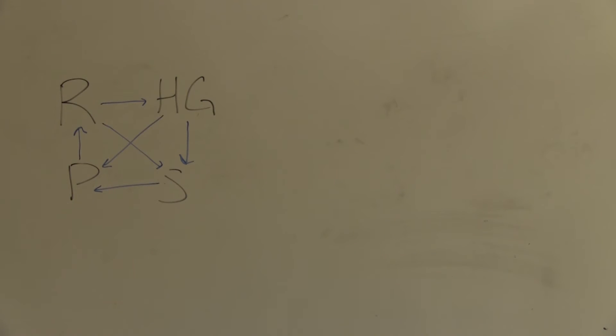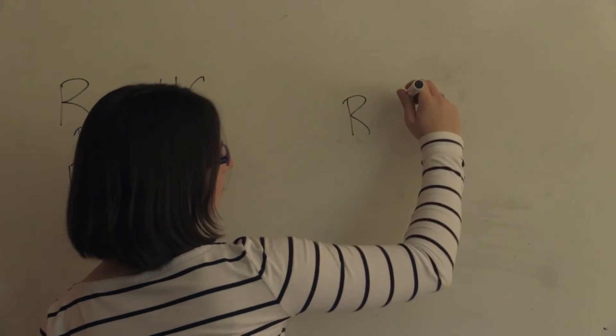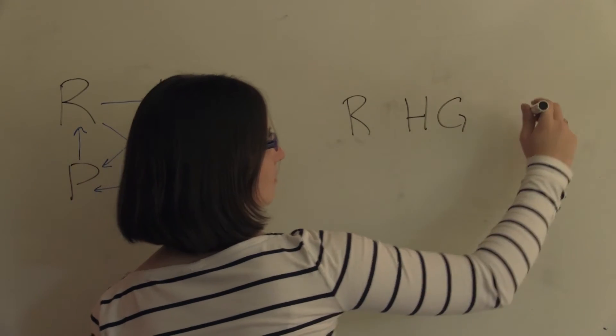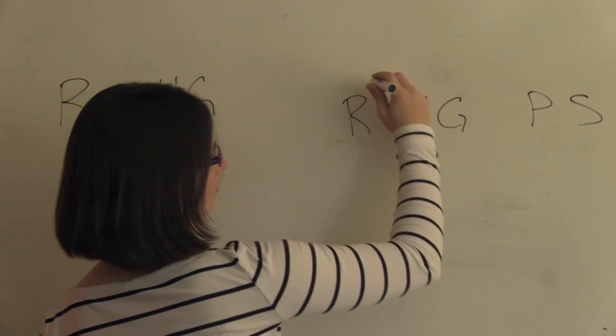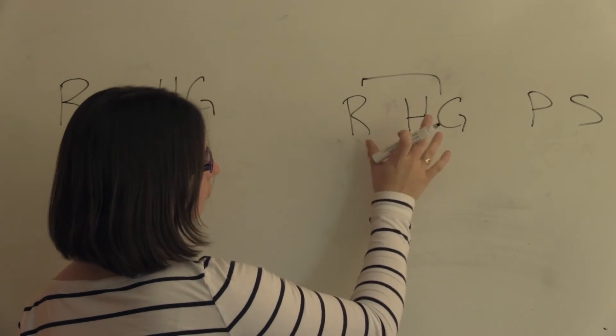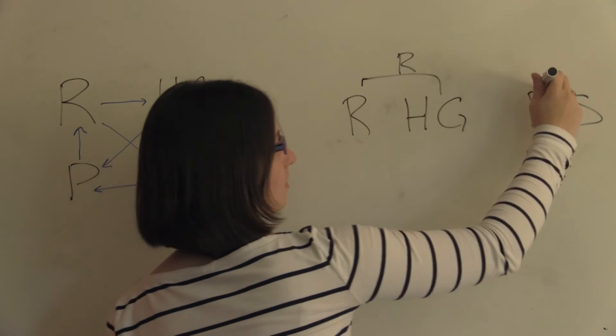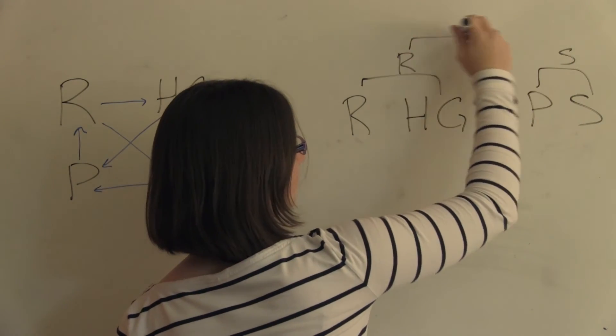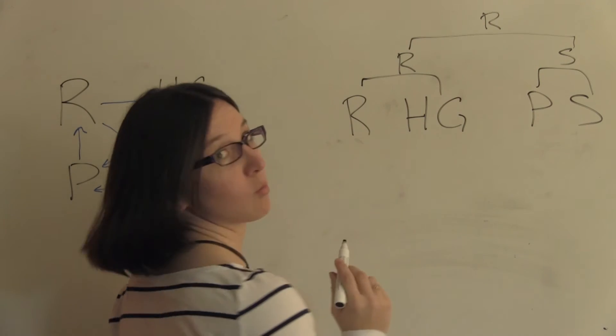Now we can look at two different tournament brackets that have different winners. So if we have rock, hand grenade, paper, scissors, first rock wins this matchup and then scissors wins here and then rock wins the total bracket.